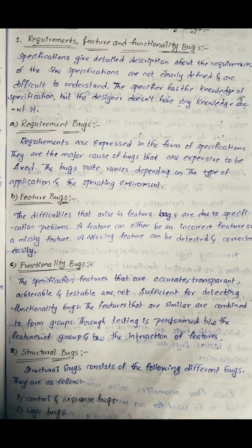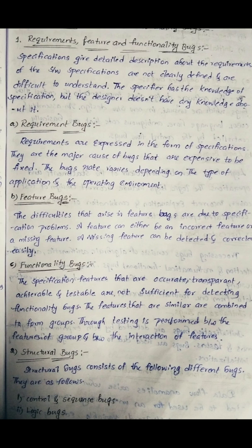The bug rate varies depending on the type of application. The second type is feature bugs. The difficulties that arise in feature bugs are due to specification problems. If there are specification problems, a feature can either be an incorrect feature or a missing feature.